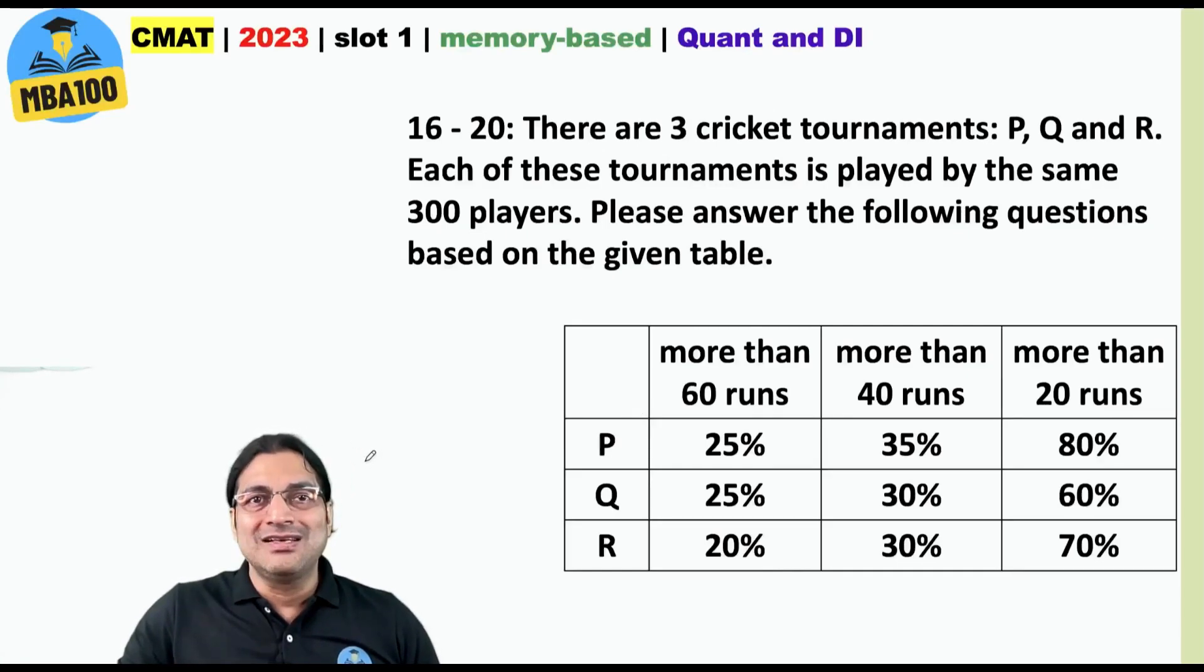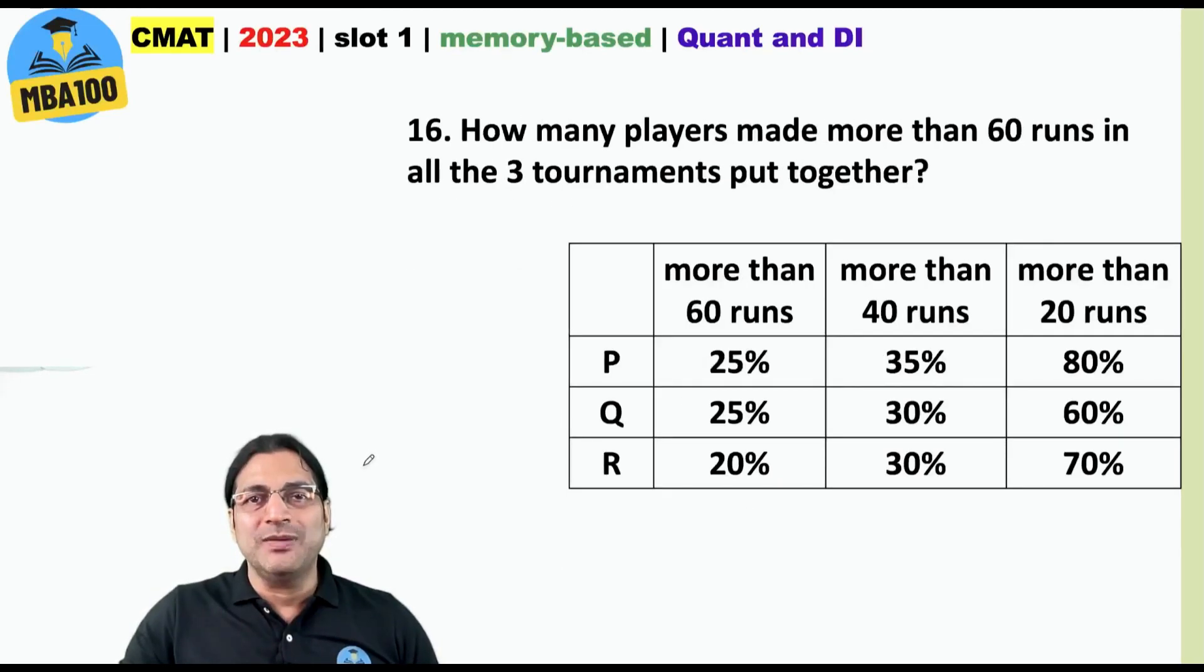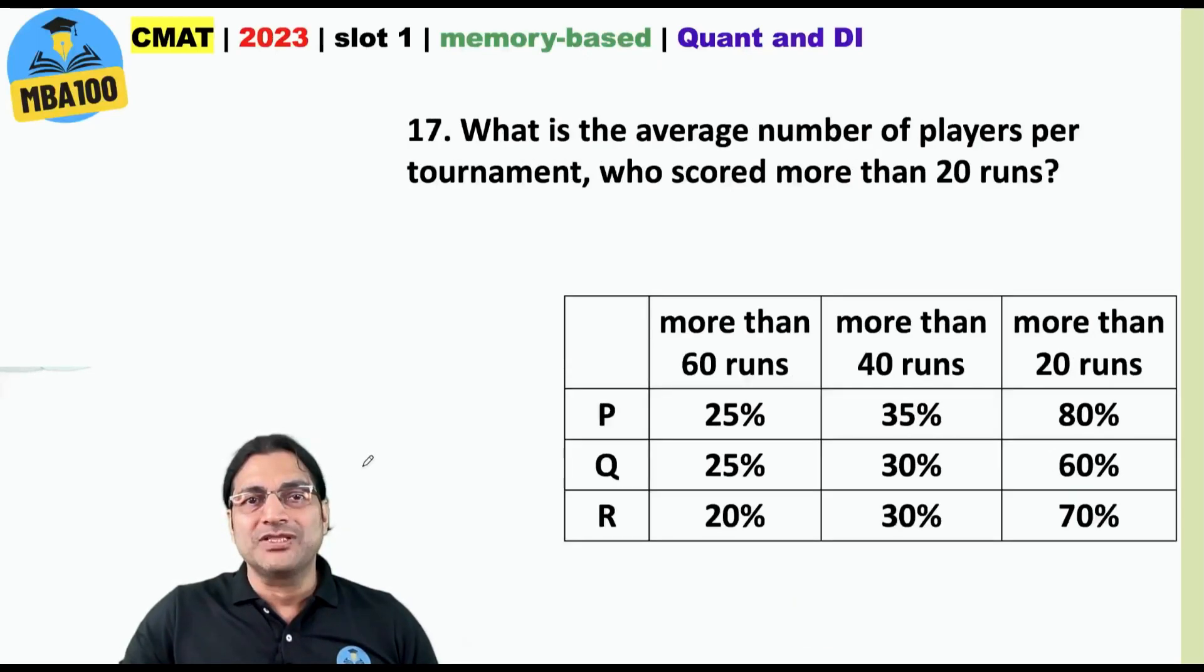First of all this entire set was based on many many many hypotheses. Many assumptions. But okay. Here how many players made more than 60 runs in all the three tournaments put together? The answer was 210. What about this one? Again 210. So there were two questions with the answer 210.